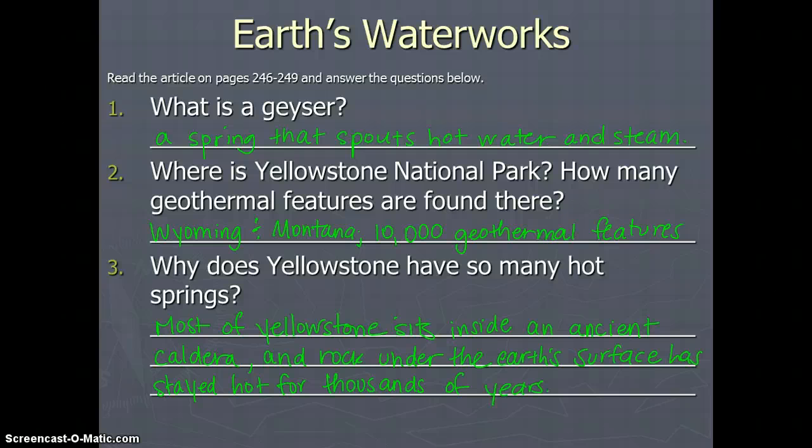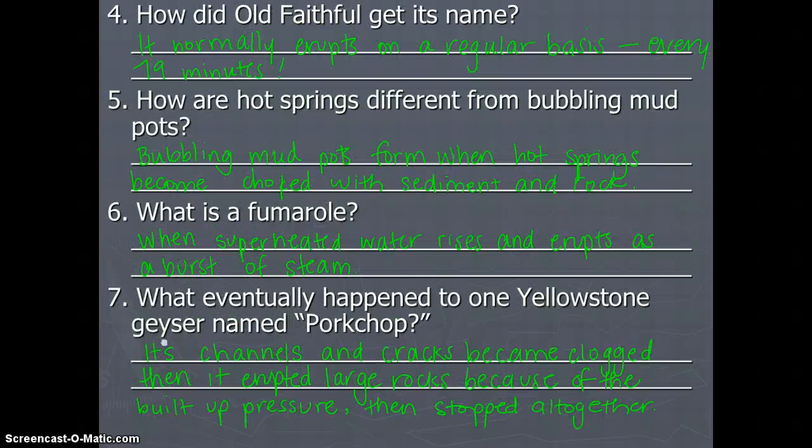Yellowstone National Park is an area in Wyoming and Montana with over 10,000 geothermal features. And it has so many hot springs because most of Yellowstone sits inside an ancient caldera. And we know that a caldera is a part of or what used to be part of a volcano. And all this rock underneath Earth's surface has stayed hot for thousands of years.